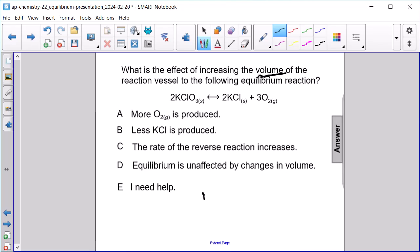So if we increase the volume, that will decrease the pressure, and that will have an effect on the gases in the equilibrium. And so what will happen is the equilibrium will shift to favor the direction that produces more moles of gas. So it's the greater number of moles of gas.